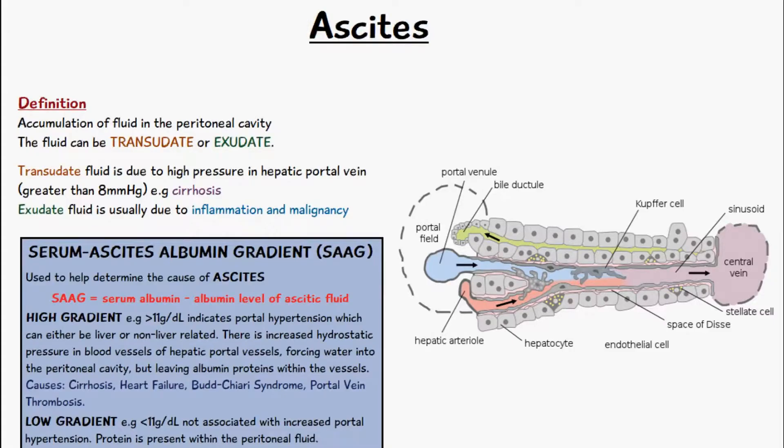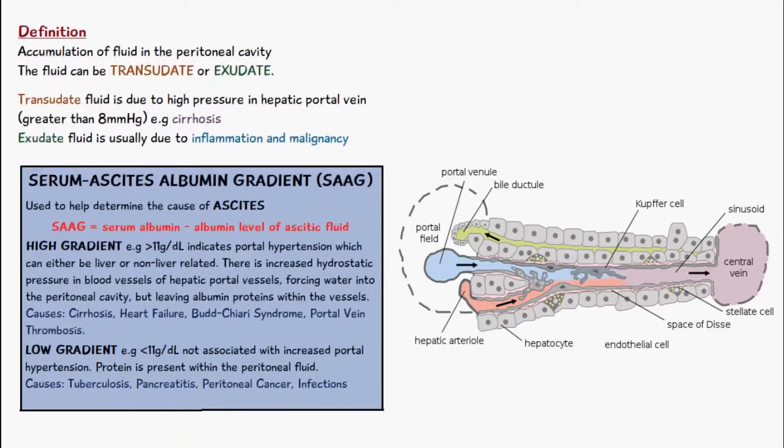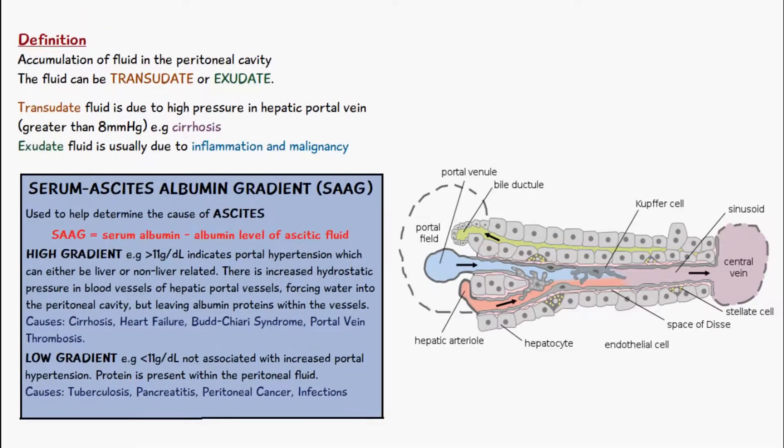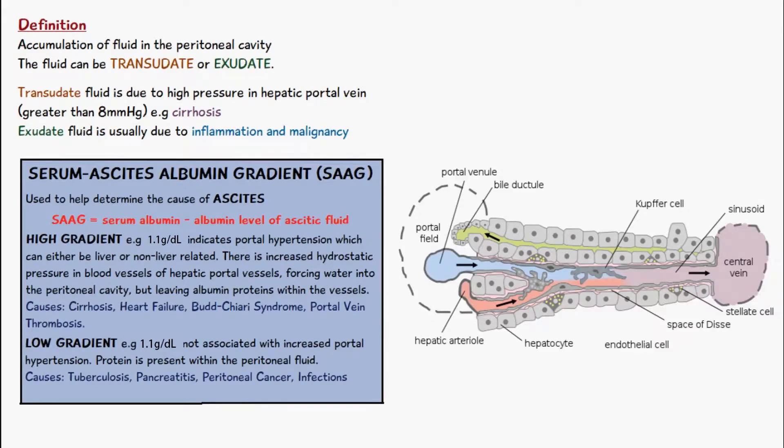We can do this test called Serum Ascites Albumin Gradient, abbreviated to SAAG, and it's used to help determine the cause of ascites. The way to work it out is with this formula where you subtract the albumin level of the ascitic fluid from the serum albumin. This formula basically means you have a total amount of serum albumin, and you subtract the amount of albumin which is in the ascitic fluid, and this gives you this gradient.